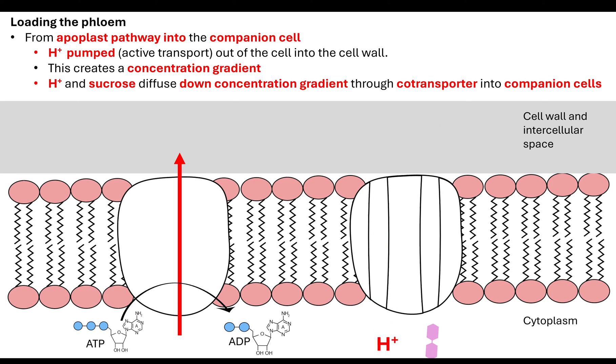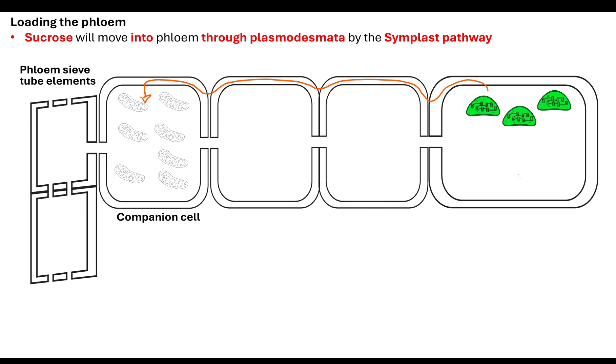Those hydrogen ions are going from low concentration in the cytoplasm to higher concentration outside. Those hydrogen ions will then diffuse down their concentration gradient through a co-transporter. That will move the sucrose back into the cytoplasm of the companion cell along with the hydrogen ions through facilitated diffusion. Then that sucrose moves into the phloem through the plasmodesmata, back to the cytoplasm pathway.